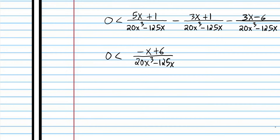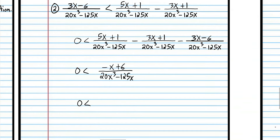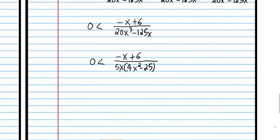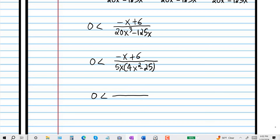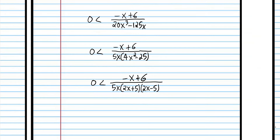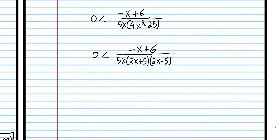That was step number two — we combined everything to one fraction. Now we're on to step three: we're going to find the x values that make the expression zero or undefined. We're going to factor the difference of two squares. If we plug in six, we make the numerator zero. We have positive five halves and negative five halves that make the denominator zero.